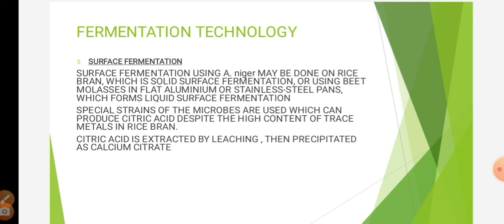Solid surface fermentation includes the use of rice bran, which is carried out in less developed areas of some Asian countries. The pH of the medium is adjusted to 4 to 5 and then it is sterilized. The inoculum in the form of spores of Aspergillus niger is spread as layers and incubated at 28°C. The growth of organisms on solid surface fermentation can be accelerated by the addition of alpha amylase. At the end of the process, citric acid is extracted into hot water and then isolated.